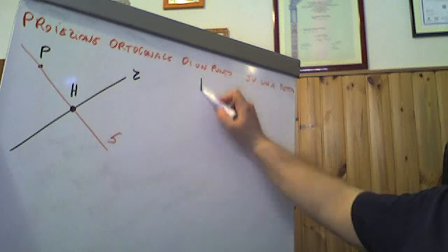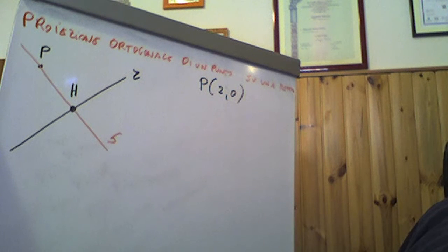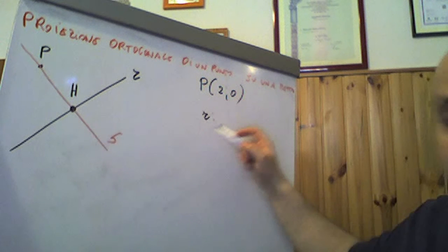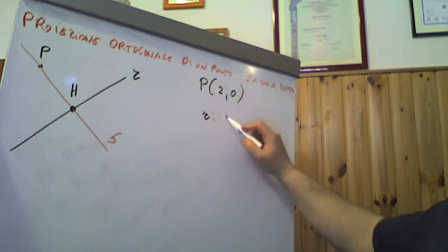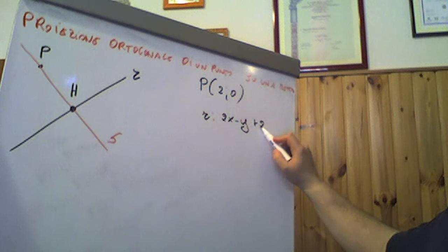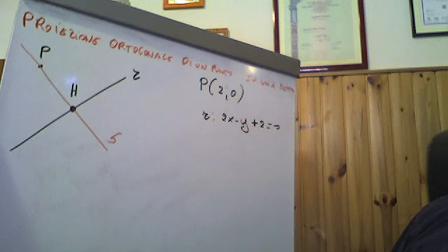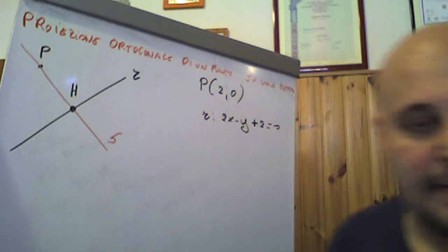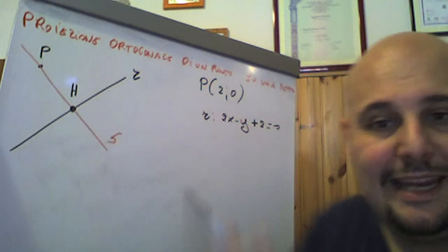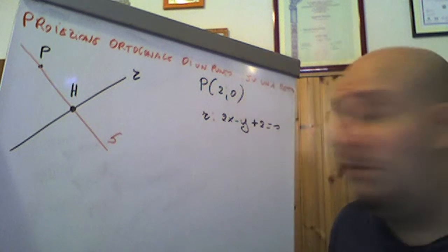Supponiamo di considerare un punto P che ha coordinate (2, 0) e supponiamo che ci sia una retta R con equazione 2x - y + 2 = 0. Se volessimo determinare la proiezione ortogonale del punto P sulla retta R, quindi il punto H, perché è H la proiezione ortogonale di P su R, cosa dovremmo fare?